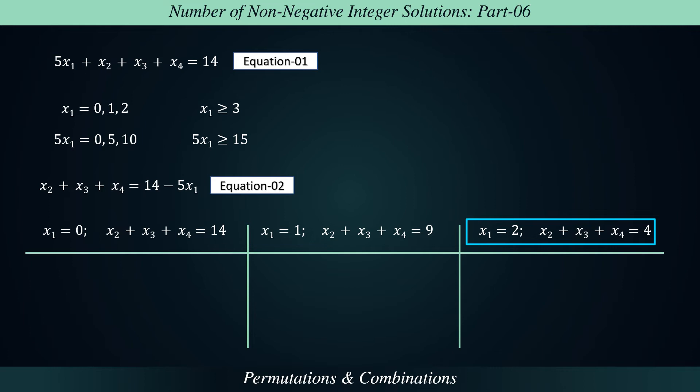According to addition principle of counting, sum of number of non-negative integer solutions of these three linear equations is equal to number of non-negative integer solution of equation 1. When x2 plus x3 plus x4 equals 14, the number of solutions equals 16 factorial divided by product of 14 factorial and 2 factorial. When x2 plus x3 plus x4 equals 9, the number of solutions equals 11 factorial divided by product of 9 factorial and 2 factorial. And when x2 plus x3 plus x4 equals 4, the number of solutions equals 6 factorial divided by product of 4 factorial and 2 factorial.